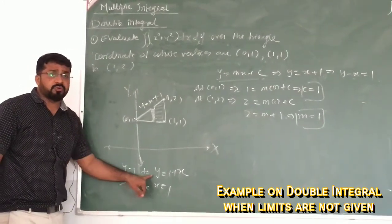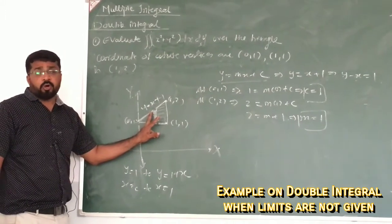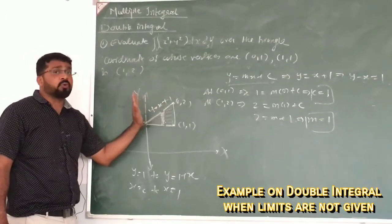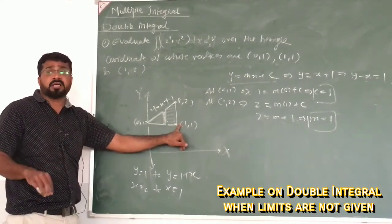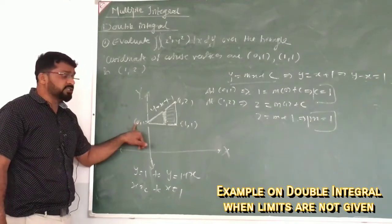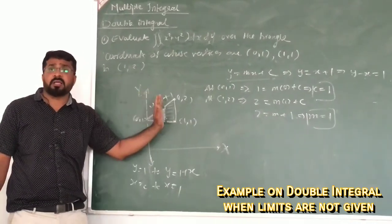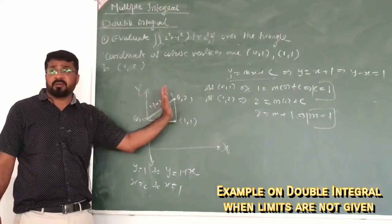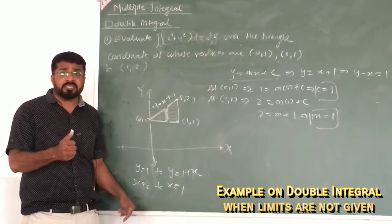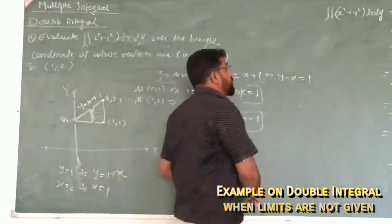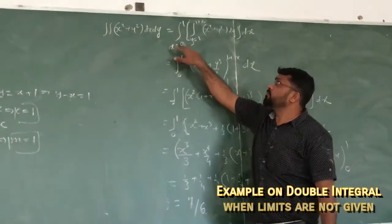We will now slide this vertical strip across the entire region. The strip is parallel to the y-axis. Sliding it gives the limits of x, which go from x equals 0 to x equals 1. So we have the limits of y in terms of x, and then the outer limits of x as constants from 0 to 1.